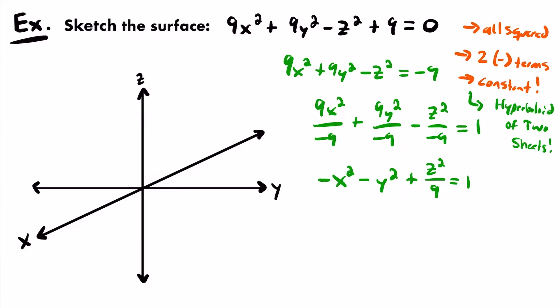We already have our equation in standard form. To sketch a hyperboloid of 2 sheets, we find the intercepts along the direction axis. First, what is our direction axis? It's based on the odd man out — we have two negative terms and one positive term, so the positive term is the odd man out. The variable in the positive term is z, so this hyperboloid will be directed along the z-axis.